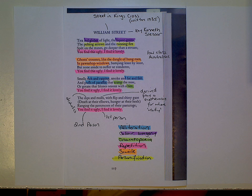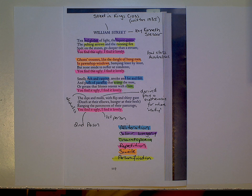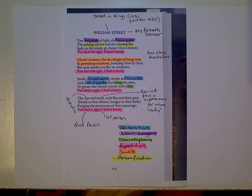We start in the first stanza by looking at 'the red globes of light, the liquor green, the pulsing arrows and the running fire.' This is all about the perception of the street itself — the red light district, the liquor, the bottles. It's depicting quite a low element of Australian society, and we need to look at urbanised environments and how this has come about within our history.